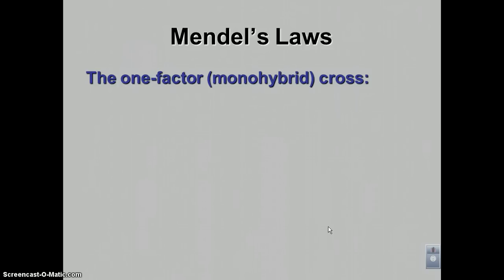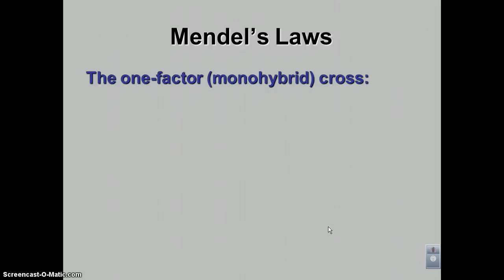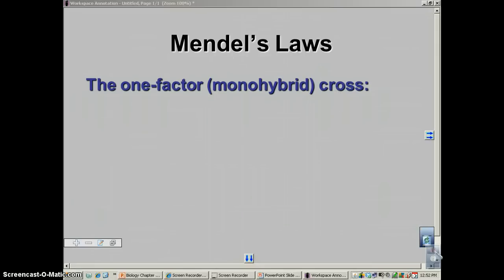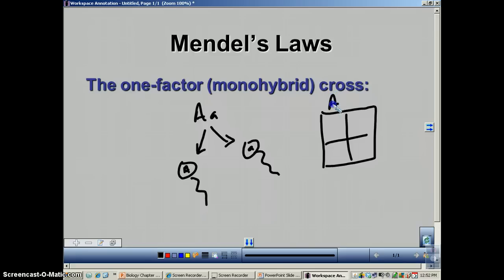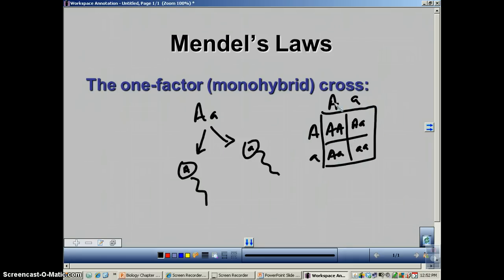This ninth podcast from chapter 11 is simply an extension of podcast number eight, where we went over the law of segregation, the basics of probability, and Punnett squares. To review: you have a dominant allele and a recessive allele. When you make gametes, you employ the law of segregation — half the gametes get one allele, the other half get the other. The outside of a Punnett square represents the gametes, and filling the inside is straightforward once you have the correct gametes on the outside.